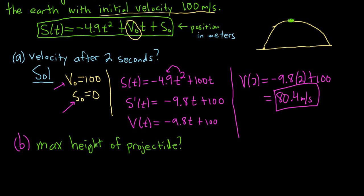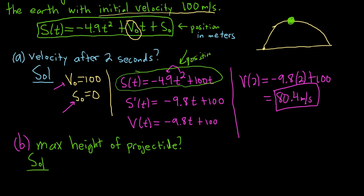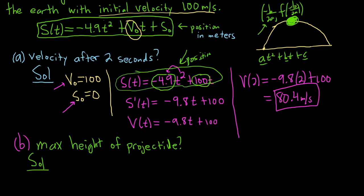So we have to find how high it goes. There are three methods. Method 1 is using intuition. Method 2 is using basic algebra — this is the vertex of a parabola, so you could use the formula negative b over 2a, then plug that into the function. Here a is negative 4.9 and b is 100. Method 3 would be to take the derivative and set it equal to zero to find the critical number, but we haven't covered that yet. So the only method we've learned so far is basic algebra, though once you know more calculus you can use calculus to do it.